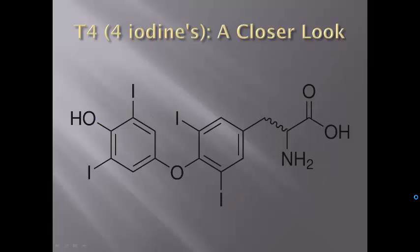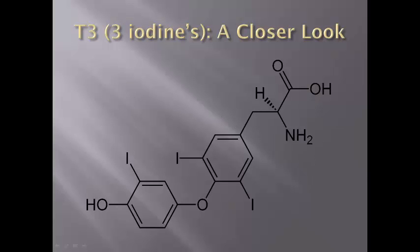Here is the molecular structure of T4: it has four iodine molecules attached to it — that's how it gets its name. Here is the molecular structure of T3, or triiodothyronine: it has three iodines attached. So the primary difference between T4 and T3 is that T3 is missing one iodine.